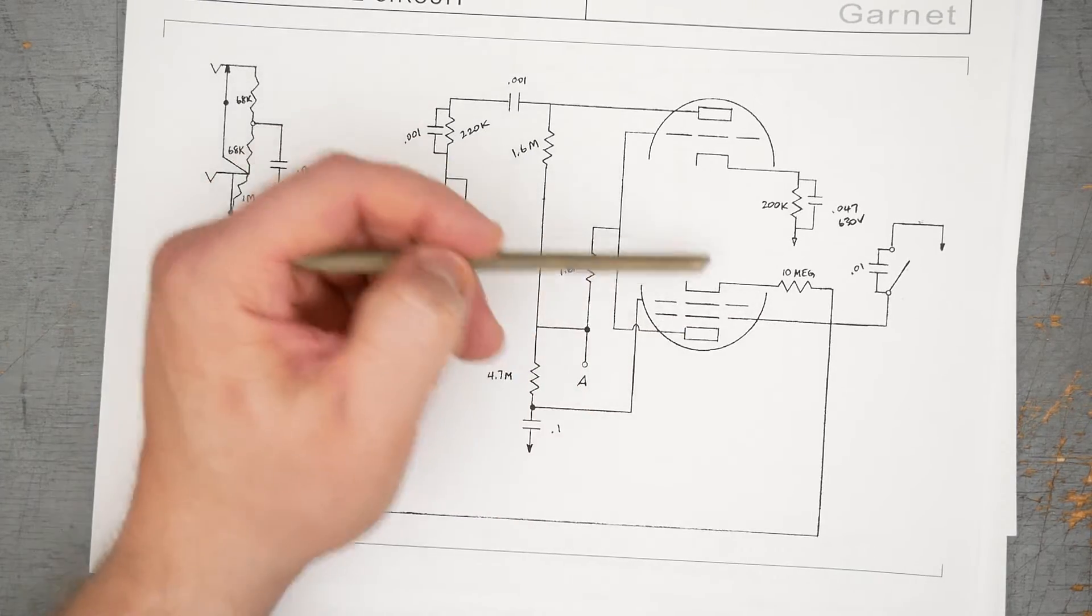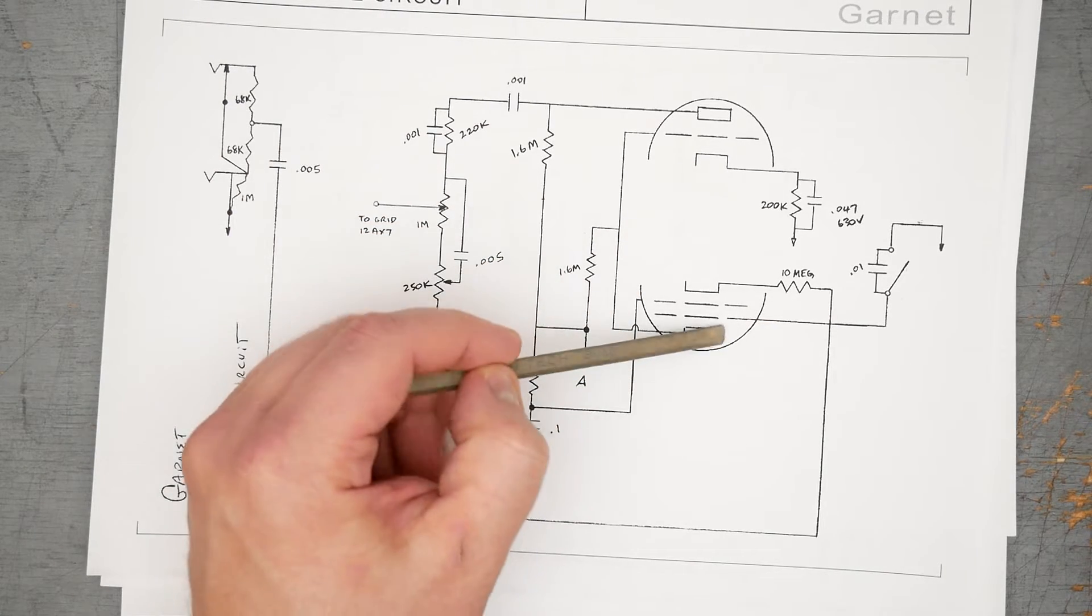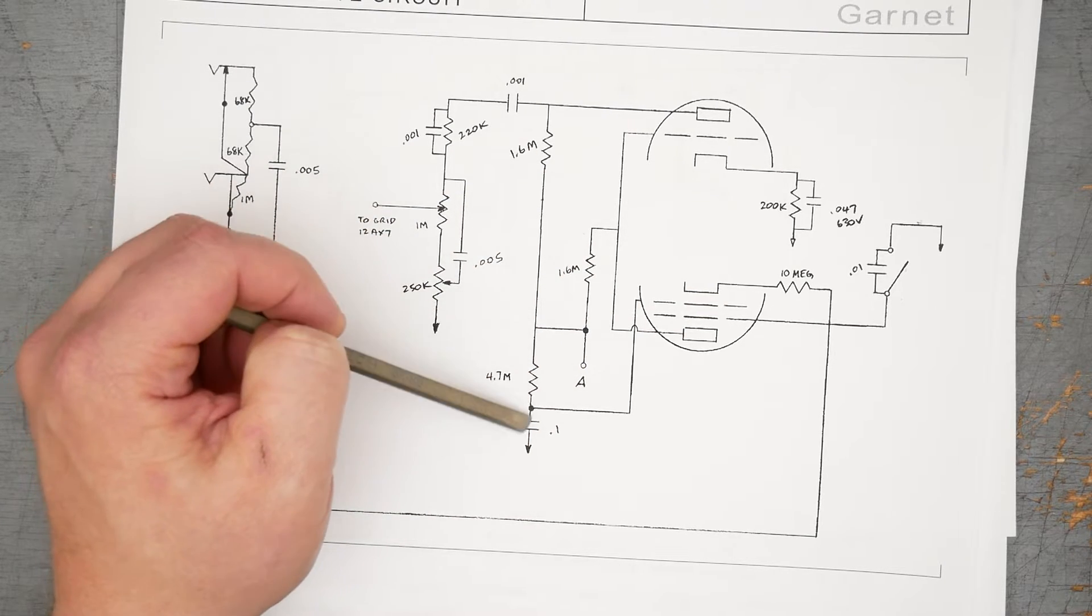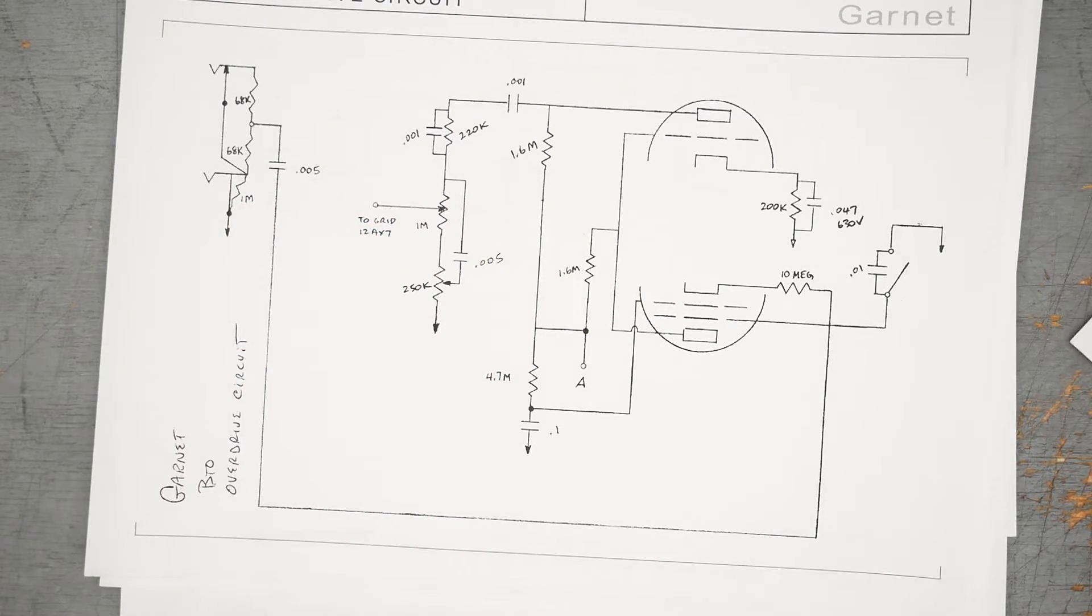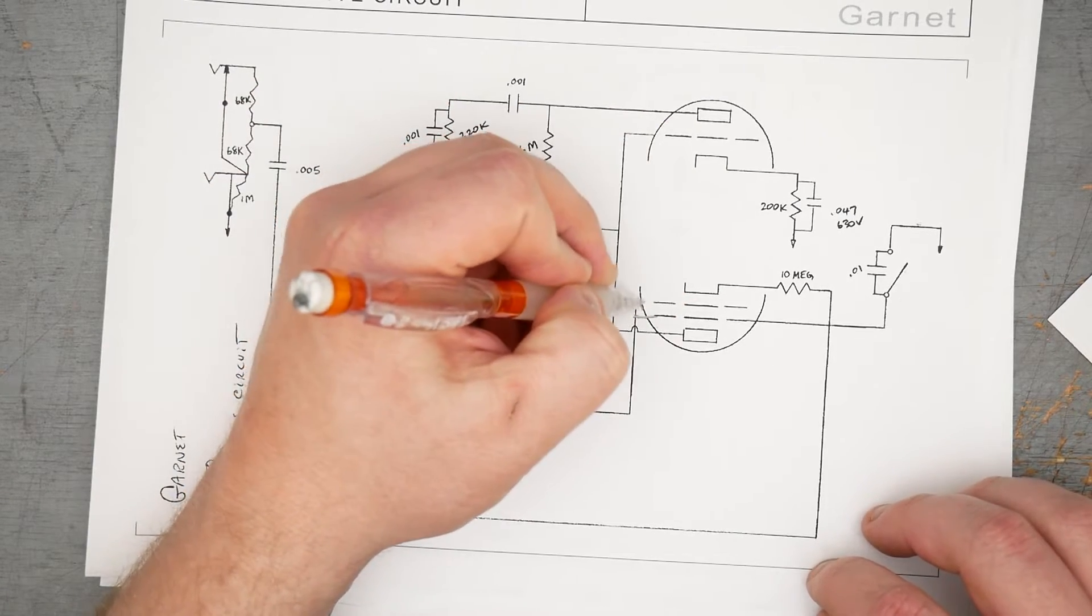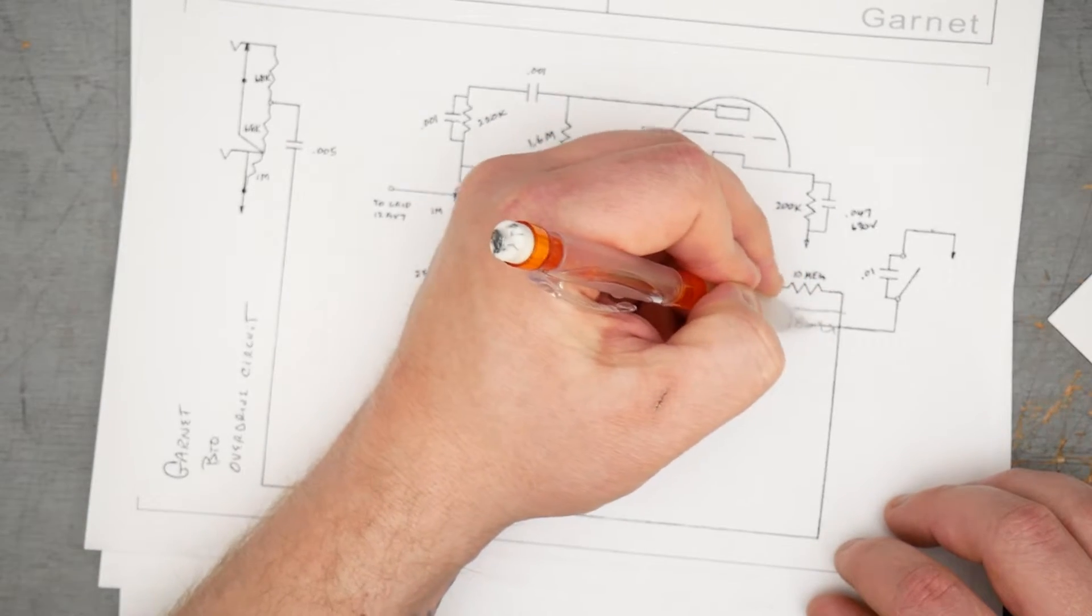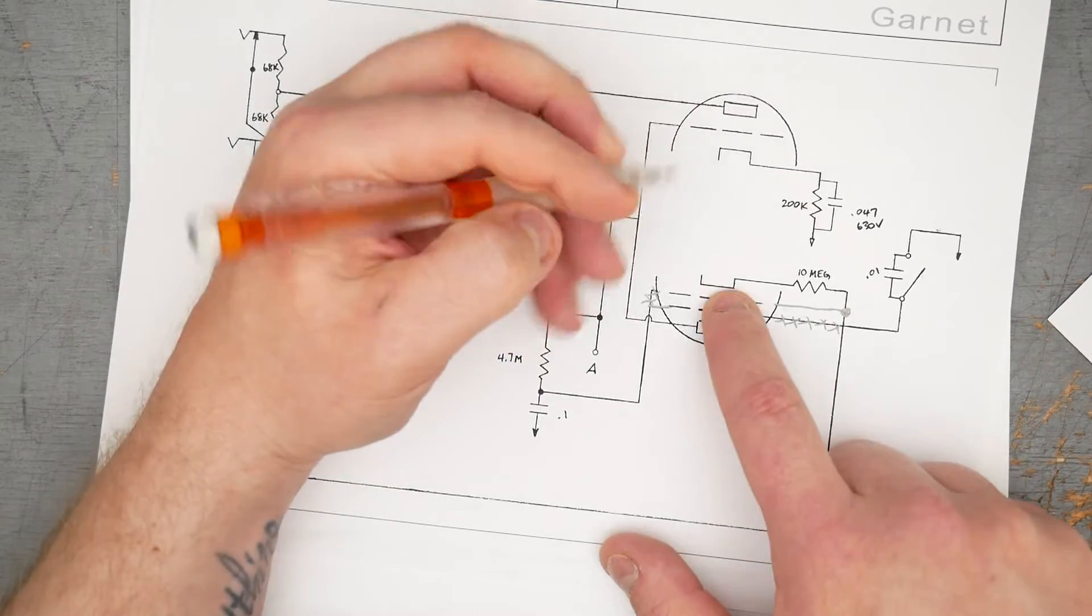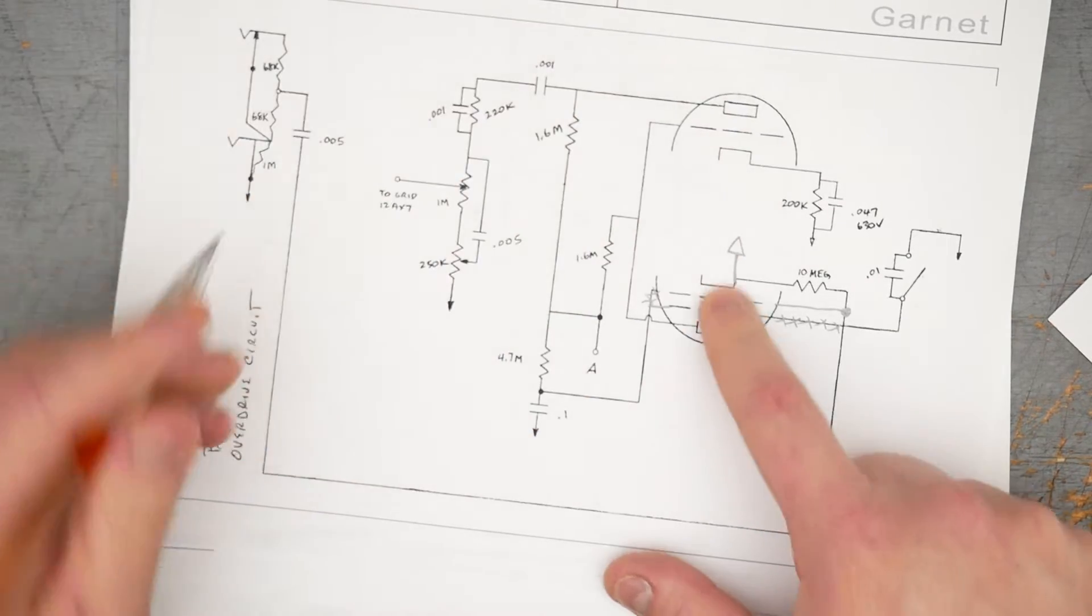If you look here, here's our input from the input jacks coming up here, but it's coming into the screen grid. This is our plate. The tube is upside down. This is our screen grid, this is our control grid, this is our cathode. The pentode does have another grid, the suppressor grid, but it's internally connected to the cathode. This connection coming in from the input jacks, it's going into the screen. First off, I think this drawing is wrong. This line should be connecting here, and then this is not correct. This line should be connecting here, and this is not correct.